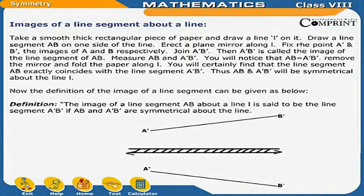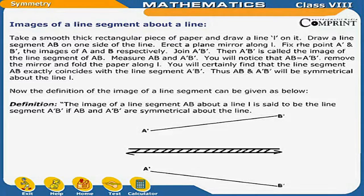Line segment about a line. Take a smooth thick rectangular piece of paper and draw a line L on it. Draw a line segment AB on one side of the line. Erect a plain mirror along L. Fix the points A' and B', the images of A and B respectively. Join A' and B'. Then A'B' is called the image of the line segment AB. Measure AB and A'B'. You will notice that AB is equal to A'B'. Remove the mirror and fold the paper along L. You will find that the line segment AB exactly coincides with the line segment A'B'. Thus AB and A'B' are symmetrical about the line L.